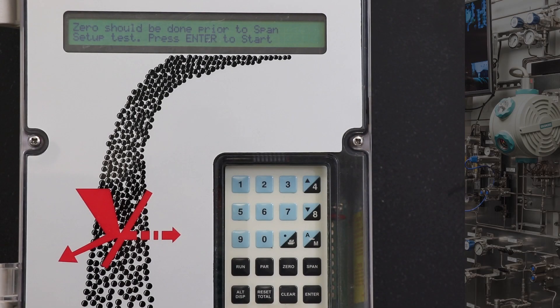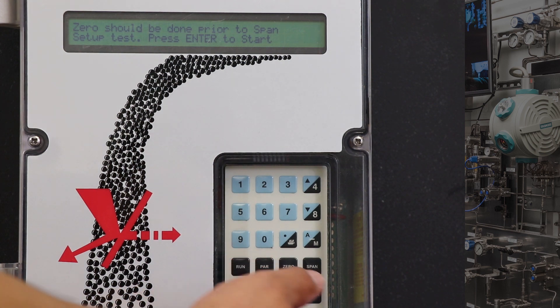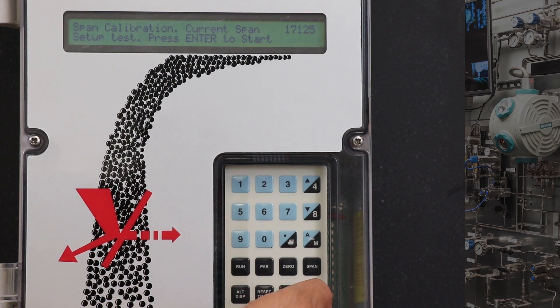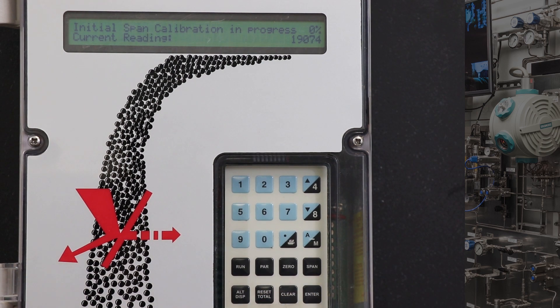Now we will start the span calibration by hitting the span button on the SF500. After this, hit the enter button. Please note, if it is a new unit, it will force you to do an initial span calibration. After initial span, you'll want to do two to three routine spans to make sure it repeats.